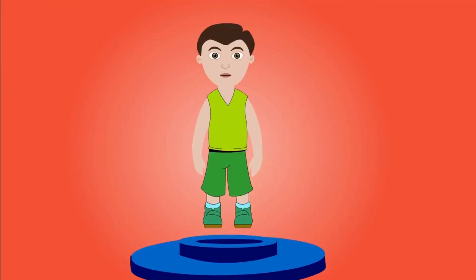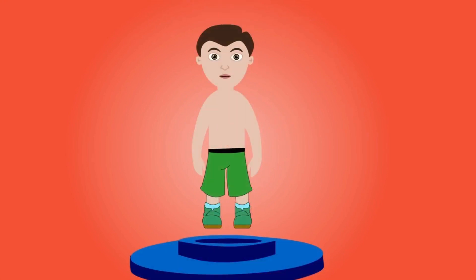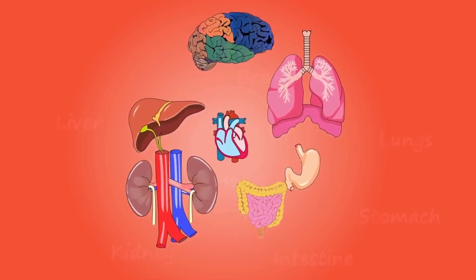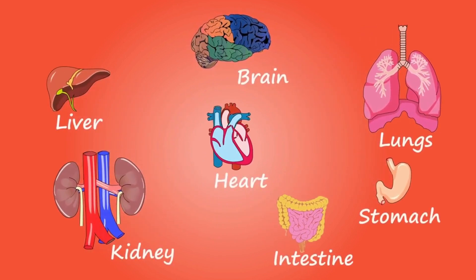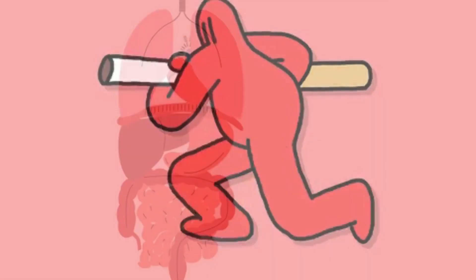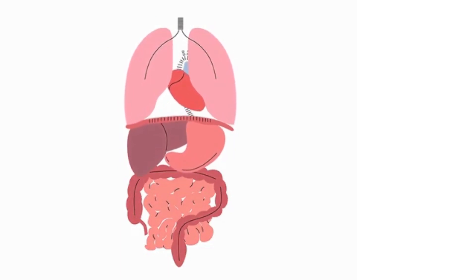The human body is comprised of a series of complex systems. Just as the organs in an organ system work together to accomplish their tasks, so the different organ systems also cooperate to keep the body running. These systems work individually as well as interconnected to carry out certain functions in our body.